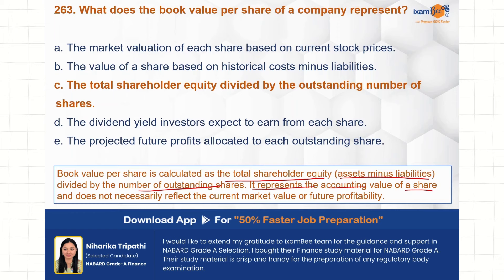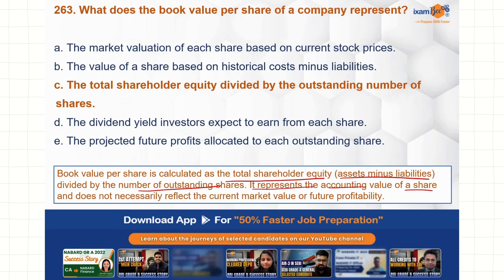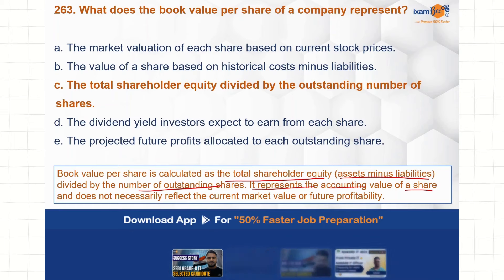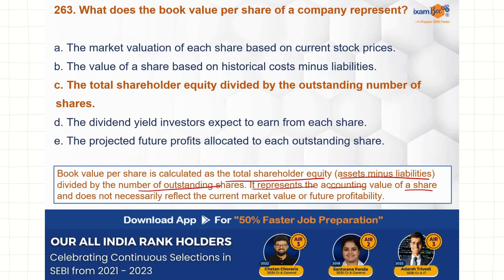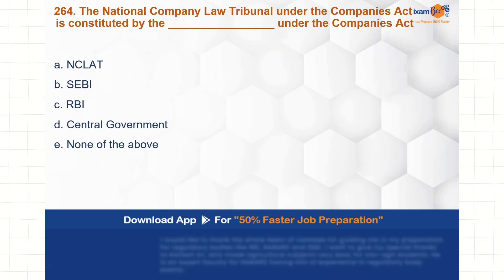The current market value amount is called market value per share. Book value per share means total assets minus outside liabilities, giving you equity shareholders' fund, divided by the outstanding number of equity shares. In other words, if the company were liquidated today, the amount each shareholder would receive is the book value per share.